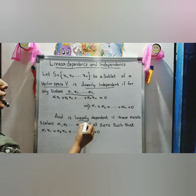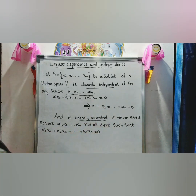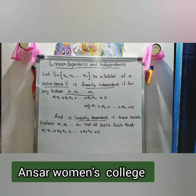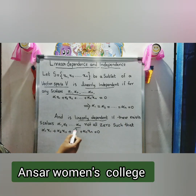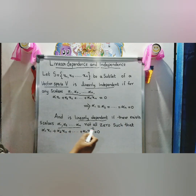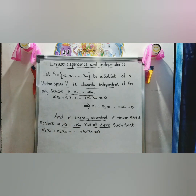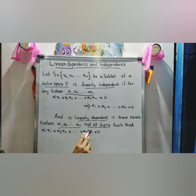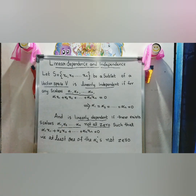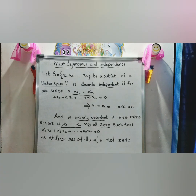S is linearly dependent if there exist scalars α₁, α₂, ..., αₙ, not all zero, such that α₁x₁ + α₂x₂ + ... + αₙxₙ = 0. That is, at least one of the αᵢ is not zero.